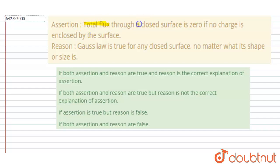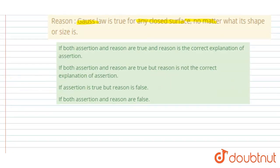that the total flux through a closed surface is zero if no charge is enclosed by the surface. Reason given here is Gauss's law is true for any closed surface, no matter what its shape and size. So if